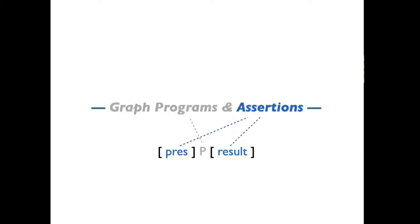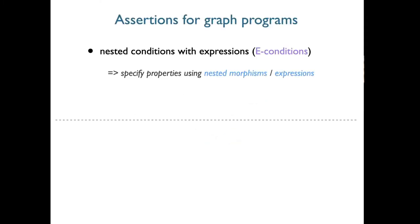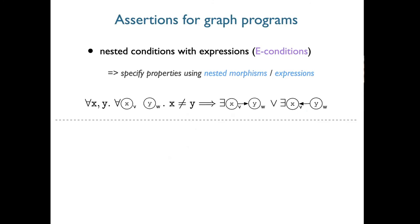For assertions, we need some way to express properties of graphs. What I've used here are the nested conditions explored by Habel and Pennemann, extended with expressions over labels. To give the gist without formal definition: we have some property expressing, for all pairs of integers and all nodes labeled by those integers, certain structural relationships between those nodes.